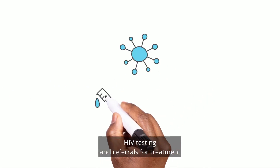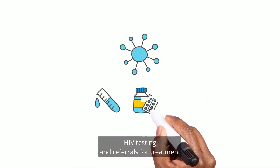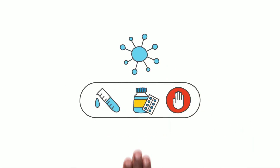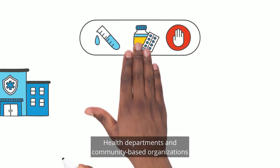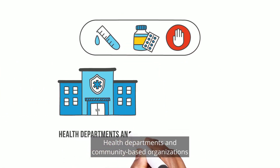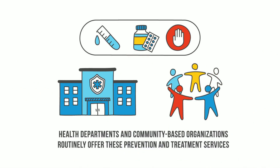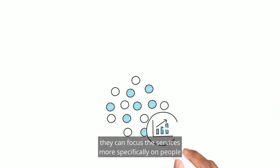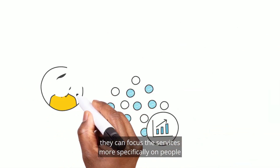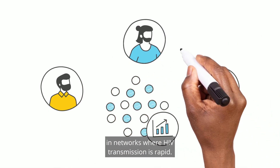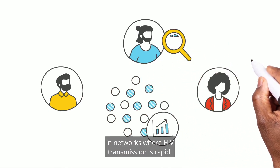HIV testing and referrals for treatment or prevention can keep everyone healthier. Health departments and community-based organizations routinely offer these prevention and treatment services, but during a cluster response they can focus the services more specifically on people in networks where HIV transmission is rapid.